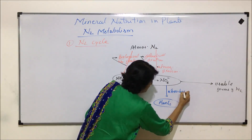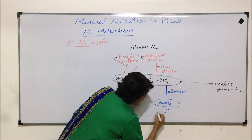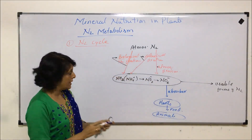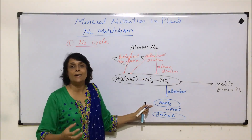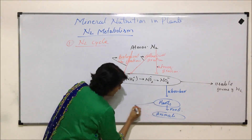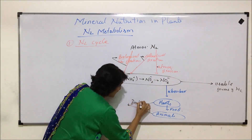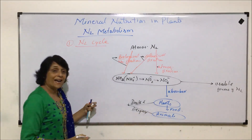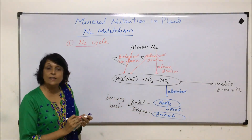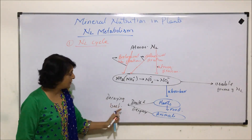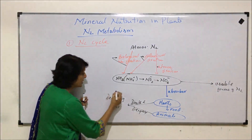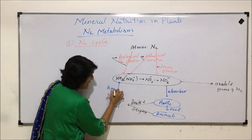These usable forms are absorbed by plants, and from plants they are taken by animals in the form of food. Plants convert that nitrogen into amino acids and proteins, and those proteins reach the animals. After their death and decay, decaying bacteria — microbes under the category of decaying bacteria — convert the proteins or whichever biomolecule contains nitrogen back into usable form. This process is known as ammonification.